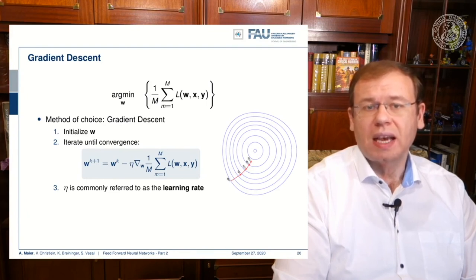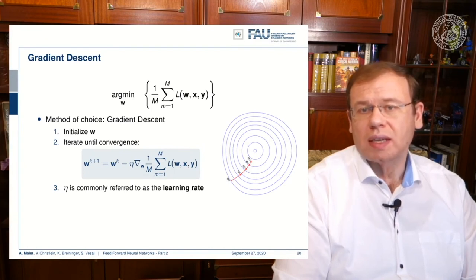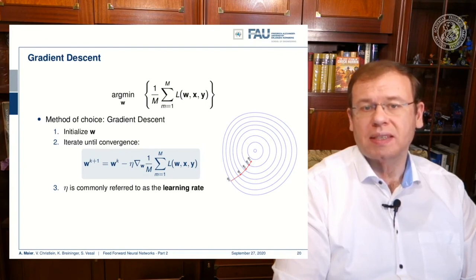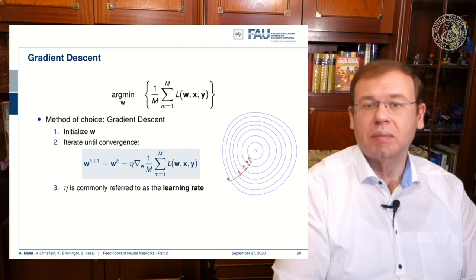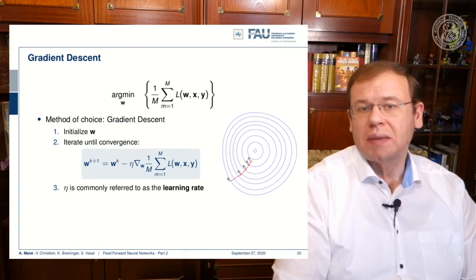And then you go ahead with the gradient descent. So you follow the negative gradient direction step by step until you arrive at some minimum. So here you can see this initial w and this may be random.